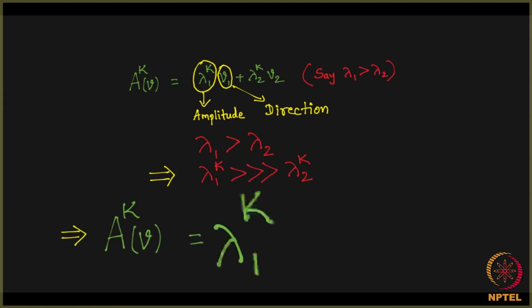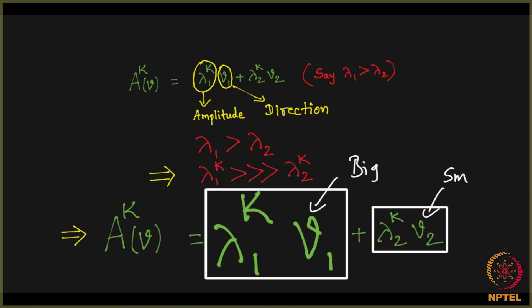So now this implies that A to the k of V is lambda 1 to the k V1, which is a very big quantity. Why? That is because lambda 1 is greater than lambda 2, and this results in lambda 1 to the k being very, very greater than lambda 2 to the k. This is a bigger entity. This is too big, this is small. Small compared to what? Small in comparison to the big thing that is sitting here. I am sorry, it is not the V1 which is big. It is this entire thing that is big is what I mean here when I say big. This entire thing is small, small in amplitude is all I am saying.